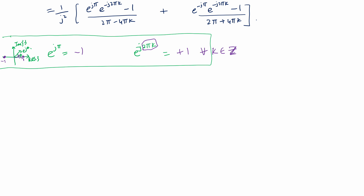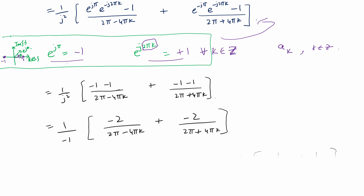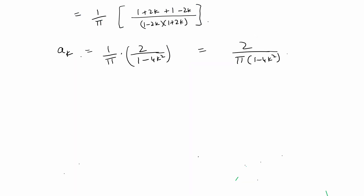Using e^(jπ) = −1 and e^(−j2πk) = 1, we substitute into the expression. With j² = −1, we get: aₖ = (1/π) × [2 / (1 − 4k²)], or equivalently aₖ = 2 / (π(1 − 4k²)).